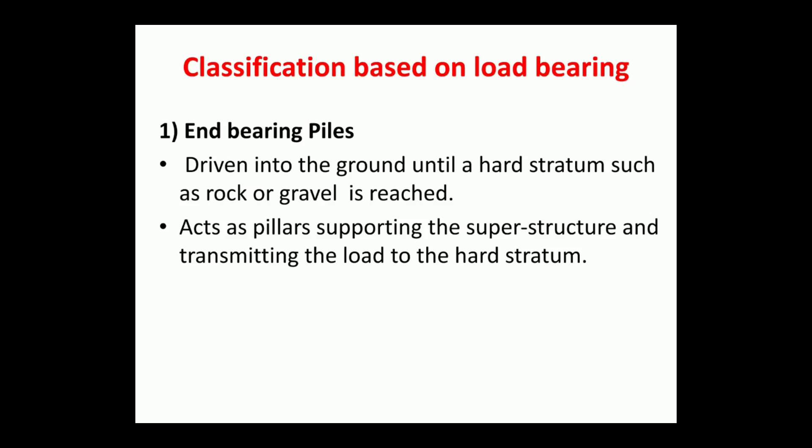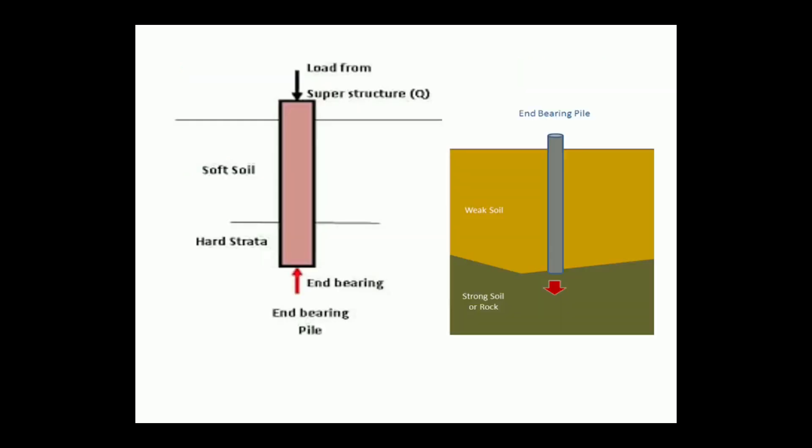End bearing piles are driven into the ground until a hard stratum is reached, such as rock or gravel. It acts as a pillar supporting the superstructure and transmits the load to the hard stratum. In this figure you can see the load from the superstructure is transferred to the hard stratum.